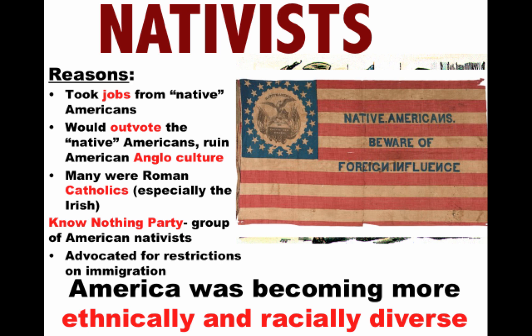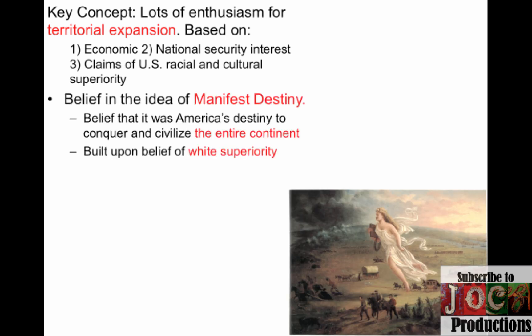An important concept to keep in mind is that America was becoming more and more ethnically and racially diverse. There's also this enthusiasm for territorial expansion, based upon economic interests, national security, and claims of U.S. racial and cultural superiority. The big belief in the 1840s is this idea of Manifest Destiny — that it was America's destiny to conquer and civilize the entire continent all the way to the Pacific Ocean, heavily built upon a belief of white superiority.